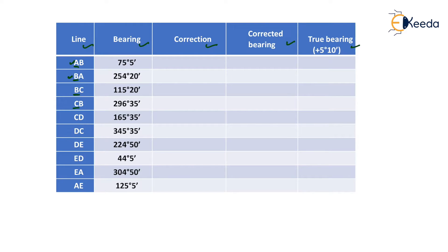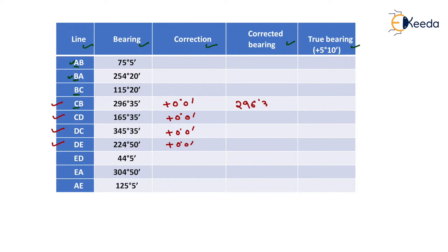Station C and station D are free from local attraction. The readings measured from station C and station D will have a correction of 0 degrees 0 minutes. After adding the bearing and zero correction, the corrected magnetic bearings are: 296 degrees 35 minutes, 165 degrees 35 minutes, 345 degrees 35 minutes, and 224 degrees 50 minutes.